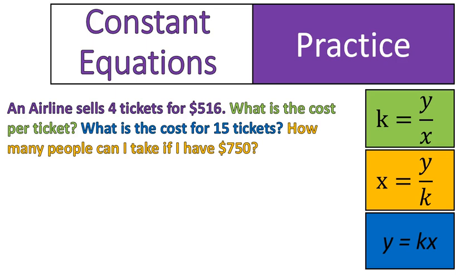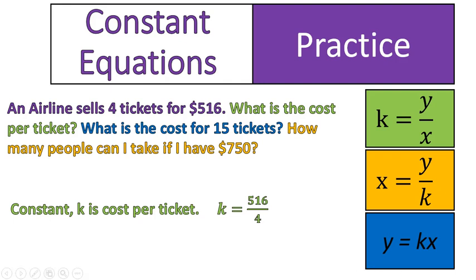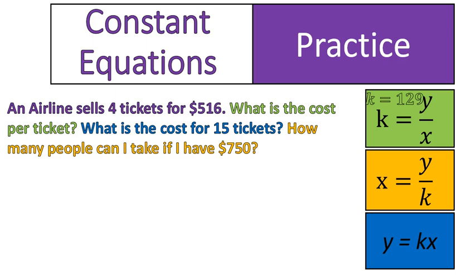Let's try another practice question. This one here is going to be a little bit different. An airline sells 4 tickets for $516. What is the cost per ticket? What is the cost for 15 tickets? And how many people can I take if I have $750? Let's get started. Number one. The constant k is the cost per tickets. So that means that I am putting cost up top, and the number of tickets underneath. That also shows me what is my dependent and independent variables, just because of this equation. Remember, dependent variable is on the top of the constant, independent variable on the bottom. So, cost per ticket. Wow, $129 for each ticket. Total of $516 divided by 4, that will give me $129. That's the constant. So I need that number to do the other equations. I need to know it's $129 per ticket.